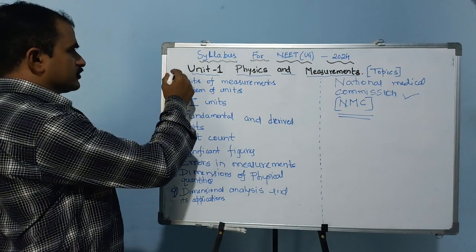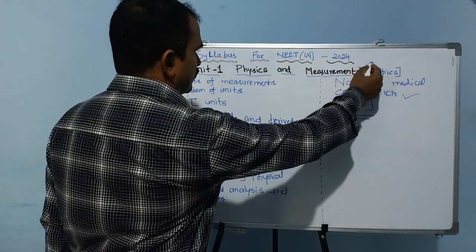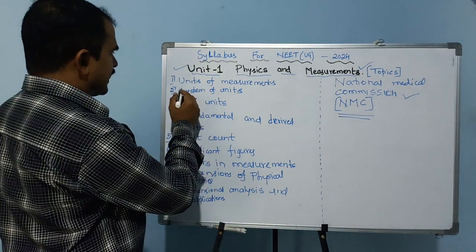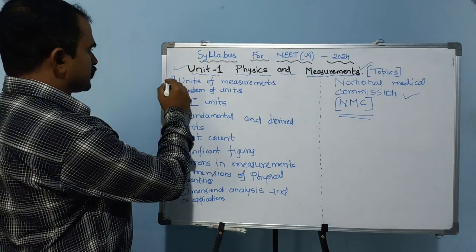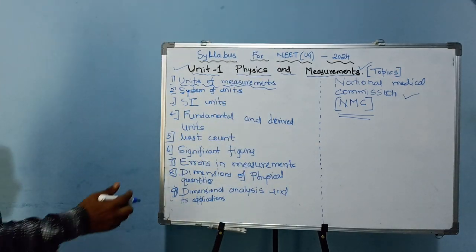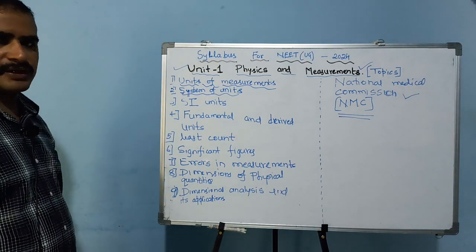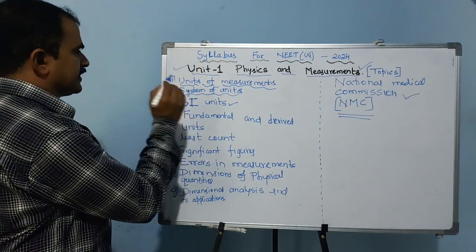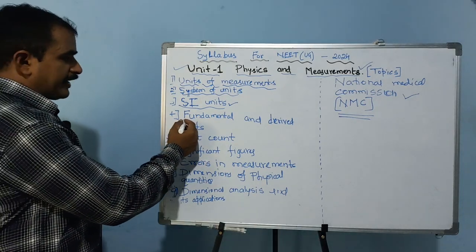The first topic is Unit 1: Physics and Measurement. Under units and measurements, the first area is the unit of measurement. Next is the system of units — there are many systems such as CGS, FPS, and MKS. You should also study in detail the SI system (International System of Units), along with fundamental units and derived units, which are included for the NEET examination.